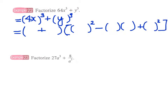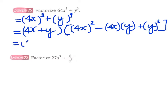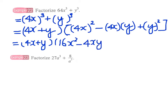Therefore we can fill in the brackets like this: we have 4x plus y, multiplied by the square of 4x, minus 4x times y, plus the square of y. Simplifying, this gives 16x² minus 4xy plus y².